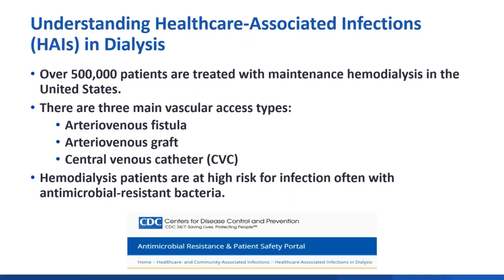Each year, approximately 500,000 individuals are treated with maintenance hemodialysis in the United States. Each person receiving dialysis requires a mechanism for vascular access so that person's blood circulation can be connected to the dialysis machinery. There are three main vascular access types: fistula, graft, and central venous catheter, or CVC. CVC has two subgroups, tunneled and non-tunneled CVCs, which have been combined into one CVC classification for our purposes.